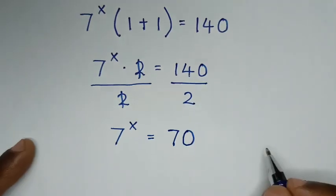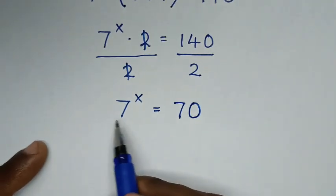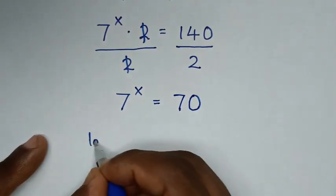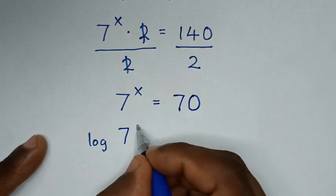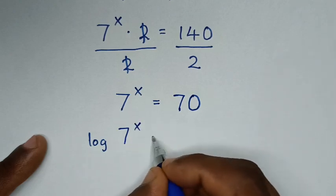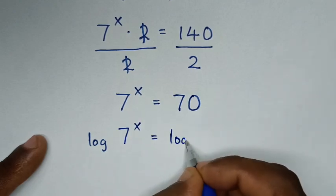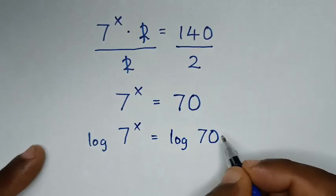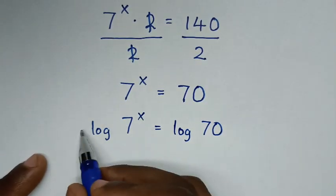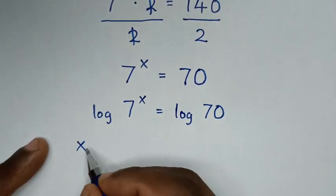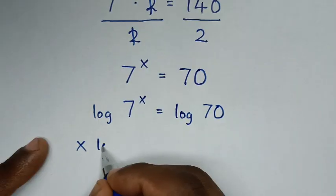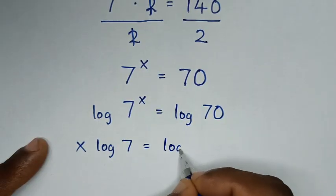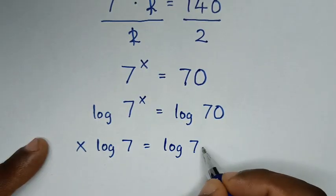Then in the next step, we'll apply log on both sides. So it will be log of 7 power of x is equal to log of 70. This power of x will move to the front, so it will be x log of 7 is equal to log of 70.